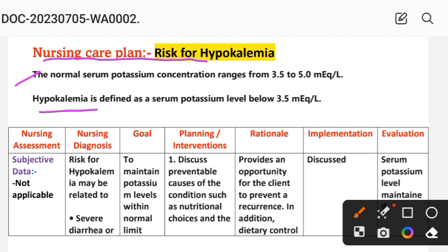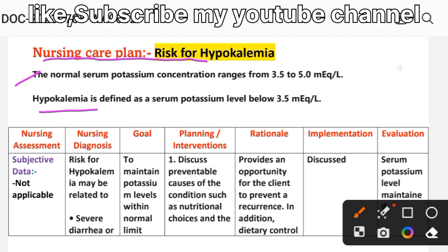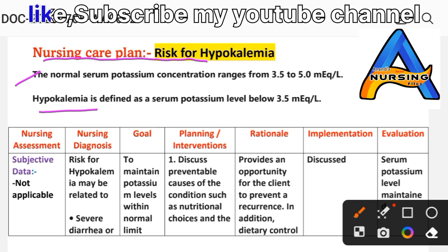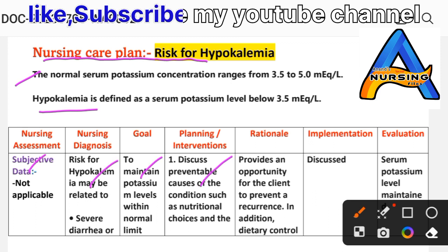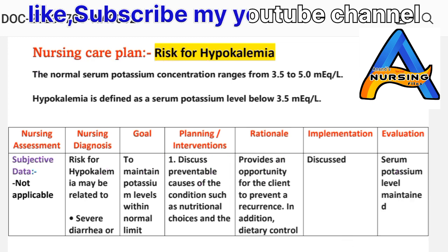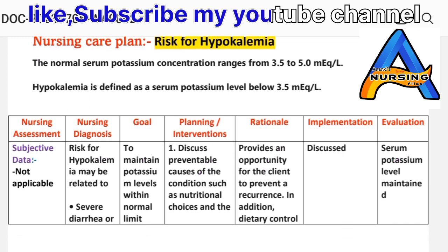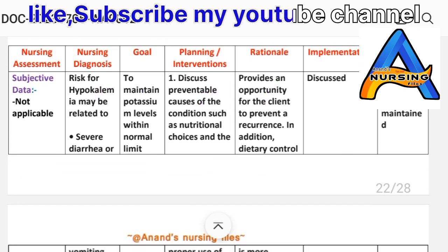In the nursing care plan, different nursing process steps are used: nursing assessment, diagnosis, goal, planning, intervention, rationale, implementation, and evaluation.